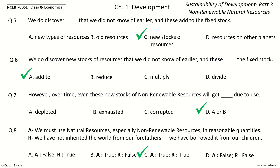The answer is option C: the assertion is true and the reason is true. We must use natural resources, especially non-renewable resources, in reasonable quantities, because we have not inherited the world from our forefathers — we have borrowed it from our children.